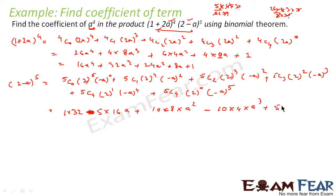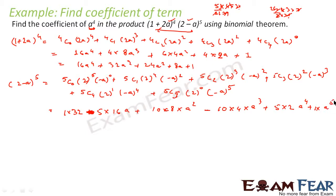Then 5C4 is 5, giving 5 × 2 × a⁴ = 10a⁴, which is positive. And 5C5 is 1, with (−a)⁵ = −a⁵, so the last term is −a⁵.